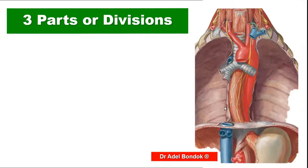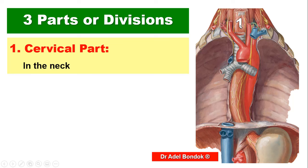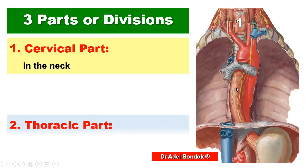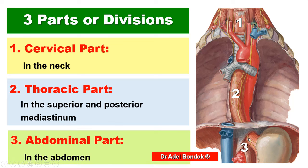The esophagus is divided into three parts. The first is the cervical part, located in the neck. The second is the thoracic part, located in the thorax — specifically in the superior mediastinum and the posterior mediastinum. The third is the abdominal part, located in the abdomen.